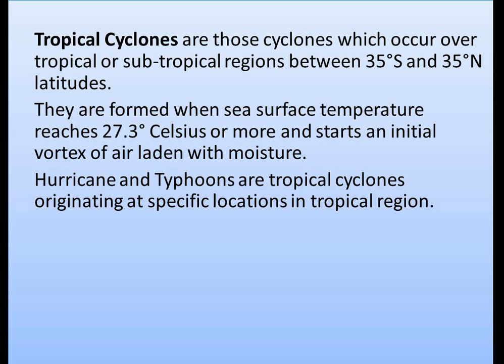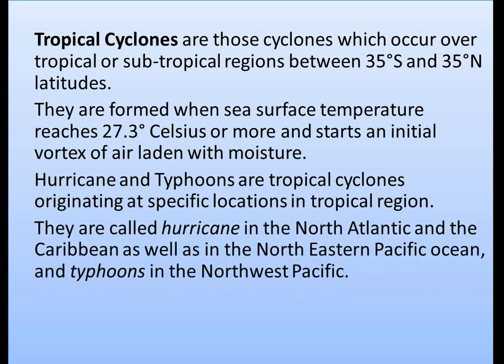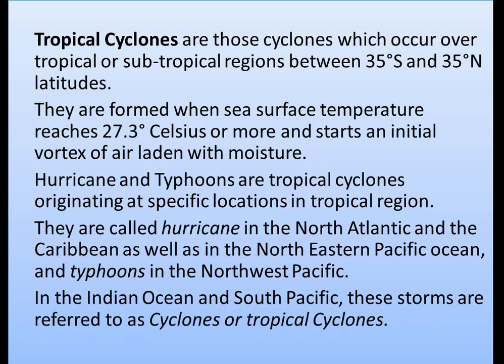Tropical cyclones are called hurricanes in the North Atlantic and the Caribbean, as well as in the northeastern Pacific Ocean, and typhoons in the northwest Pacific. In the Indian Ocean and the South Pacific, they are referred to simply as cyclones or tropical cyclones. However, these cyclones are also broadly known as hurricanes and typhoons depending on their region of origin.